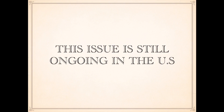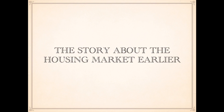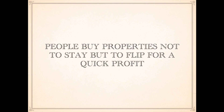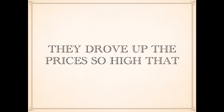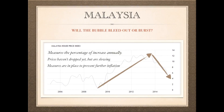Do you notice the story about the US housing market resembles what is happening in Malaysia? People buy properties not to stay but to flip for quick profit, driving up prices so high that real property buyers cannot afford them. This is a Malaysian house price index from Trading Economics — prices haven't dropped yet, but they're slowing down. Measures are in place to stop the market from further growing.